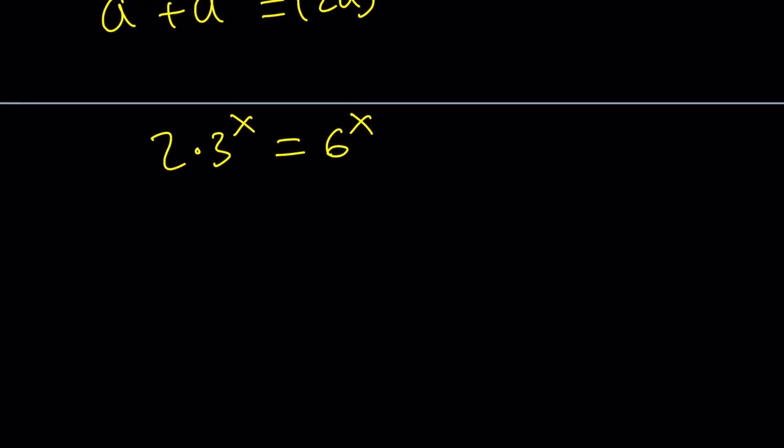Divide both sides, in other words, by 3 to the power x to isolate the constant. And then 3 to the x is going to cancel out and we're going to end up with this.